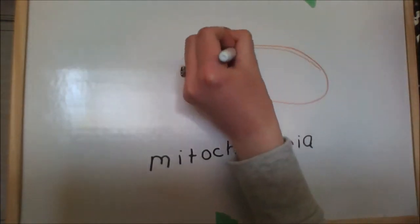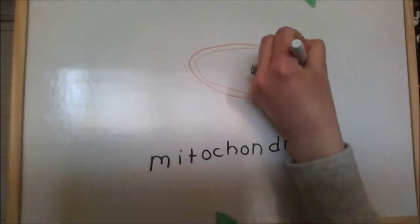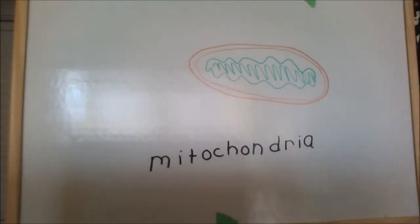The mitochondria is spherical to rod-shaped. It converts energy stored in glucose into ATP for the cell to use.